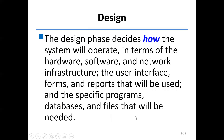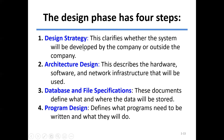The design phase decides how the system will operate in terms of hardware, software, network infrastructure, user interface, forms and reports, and specific programs, database systems, and files needed. It has four steps: design strategy (determining if the system will be built in-house or outsourced), architectural design (describing hardware, software, and network infrastructure), database and file specification (defining what and where data will be stored), and program design (defining what programs need to be written and what they will do).